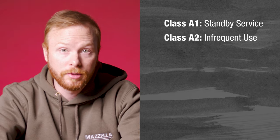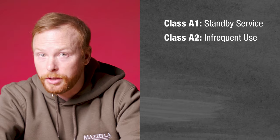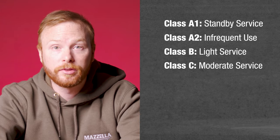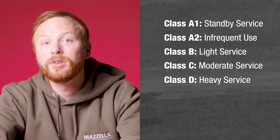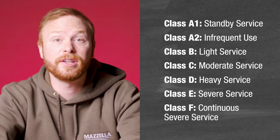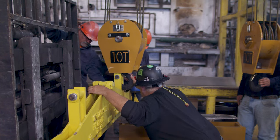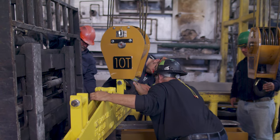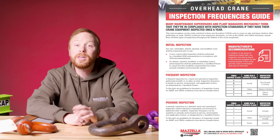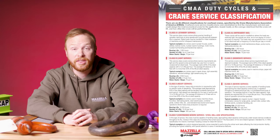Based on duty cycle, a crane will fall into six different service classifications specified by the CMAA: Class A1 and 2, Standby Service and Infrequent Use; Class B, Light Service; Class C, Moderate Service; Class D, Heavy Service; Class E, Severe Service; and Class F, Continuous Severe Service. To determine the classification of a crane, you need to see how the load class and the load cycle correlate. This can be determined based off of a table provided by the CMAA.